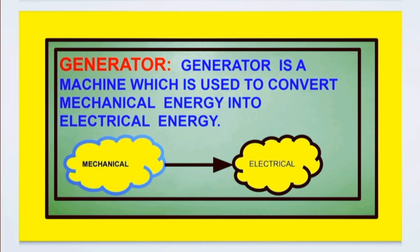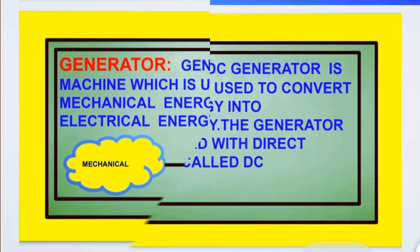What is a generator? A generator is a machine which is used to convert mechanical energy into electrical energy. Here the pictorial representation shows mechanical energy being converted into electrical energy.